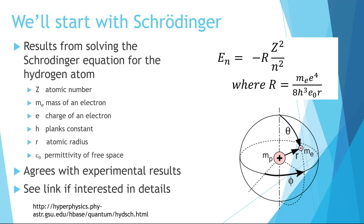Here, the results derived from the Schrödinger equation are listed. The energy value consists of different constants where Z is the atomic number, h is Planck's constant, and n is the energy level. The capital R is made up of different constants: the mass of the electron, the permittivity of free space, and the atomic radius. These were all determined theoretically, and we'll see shortly that they also agree with experiment. The process for determining this equation isn't something you'd be tested on—knowing it was determined theoretically and exactly using quantum mechanics is sufficient.